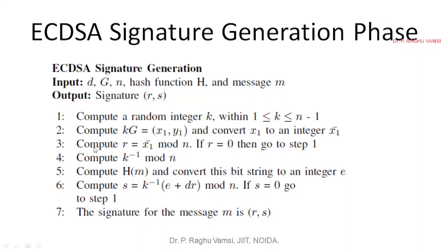Once step 3 is successful and you got a value x1 which when you perform modulo with n is not equal to 0, then compute the inverse of that random number. So k inverse mod n. Now keep that like that.